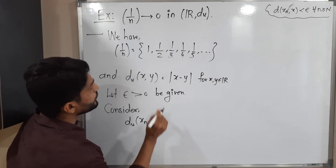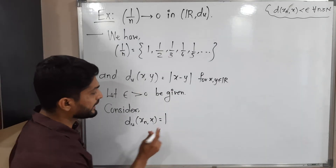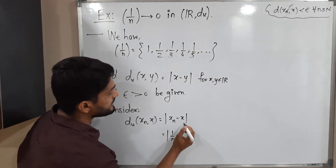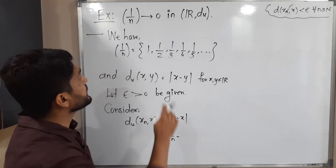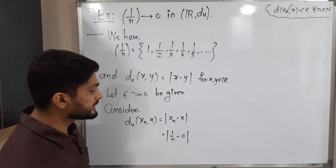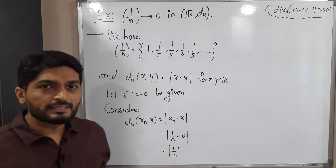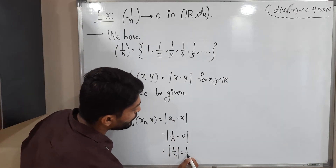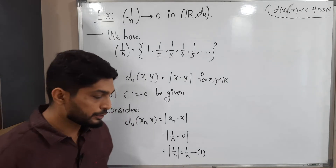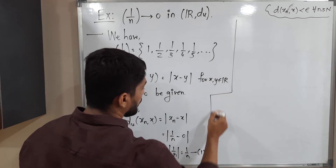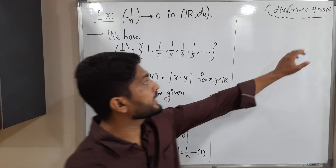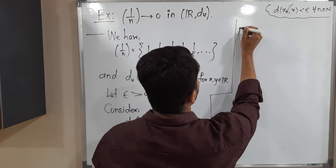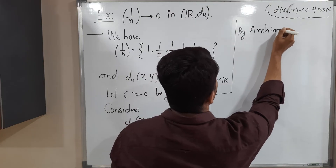Our target is to prove 1/n < epsilon. Using the Archimedean property: by the Archimedean property, there exists capital N belonging to the set of natural numbers. Our target is to find N such that D(X_n, X) < epsilon. We found its value is 1/n, so we need to prove 1/n < epsilon. Rearranging: 1/epsilon < n, so n should be greater than 1/epsilon. Therefore, capital N is chosen such that 1/epsilon < N.